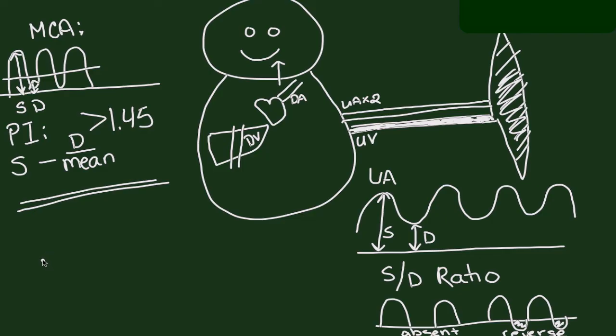The ductus venosus has a very different-looking waveform than either the umbilical artery or the MCA. You see this kind of characteristic peak with systole, sort of a late diastole peak and then a kick for arterial systole. So it's really this very characteristic sort of M shape that you see with the ductus venosus.